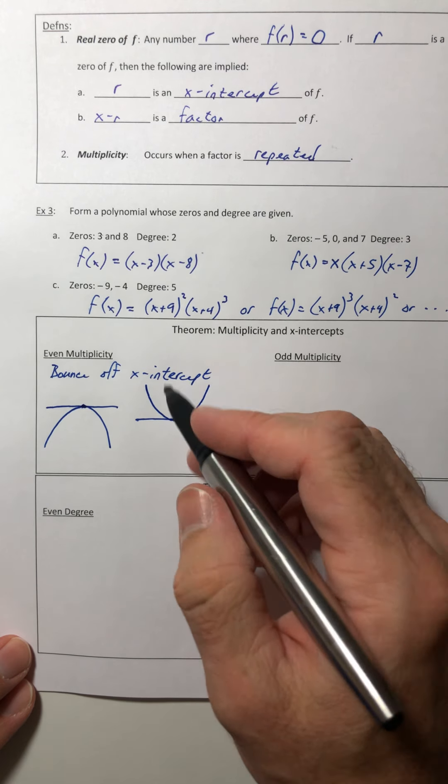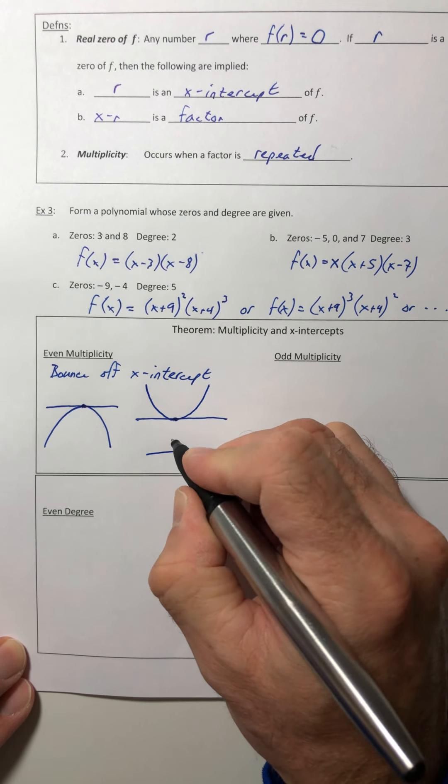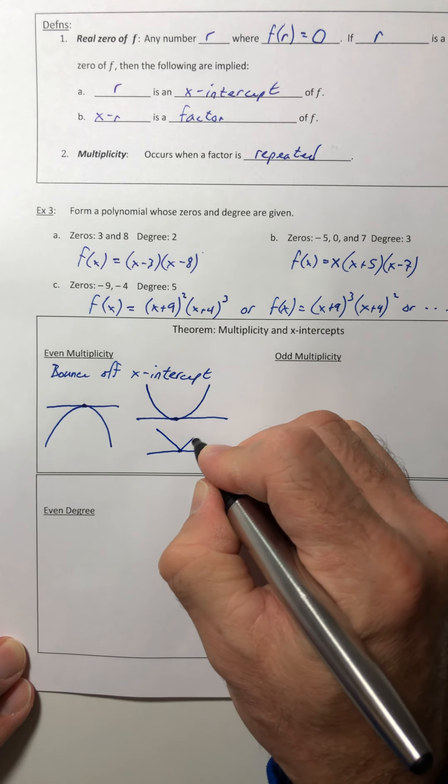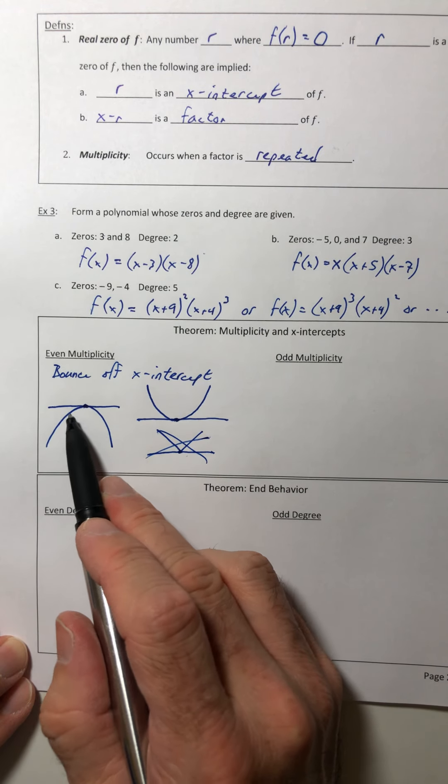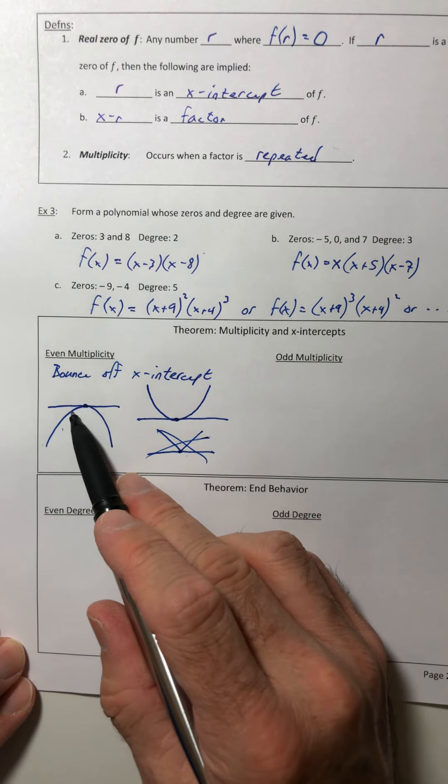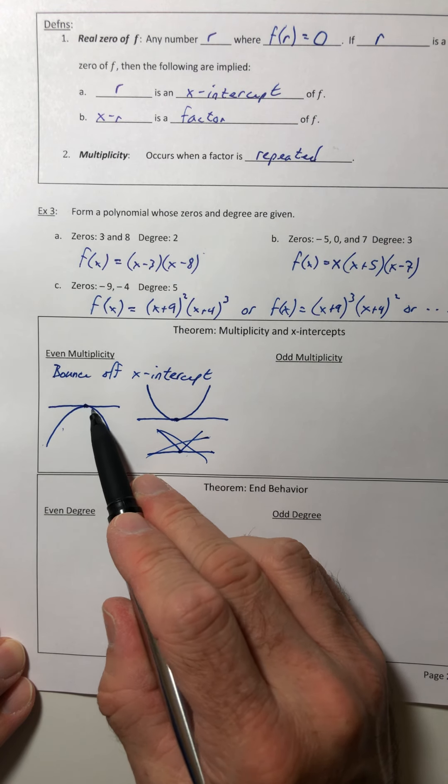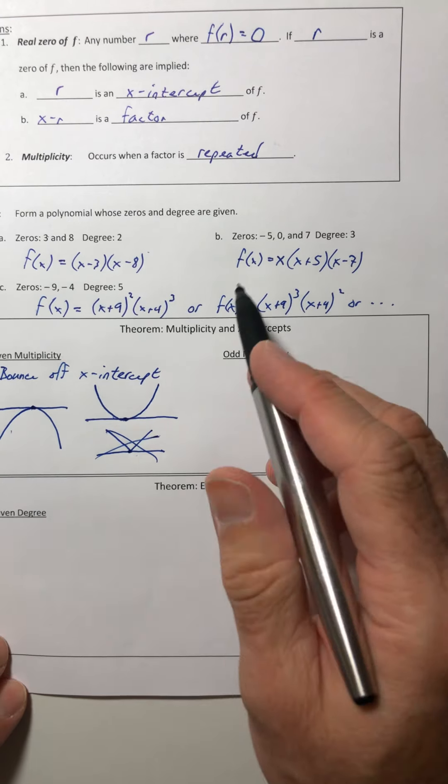It's not a sharp point. Like don't draw a V. It's not something like that. So don't do that. It's a parabolic shape when it hits the intercept. So it's going to come in, hit it, and then come back down or come down and hit it and go right back up depending on which way the graph is going.